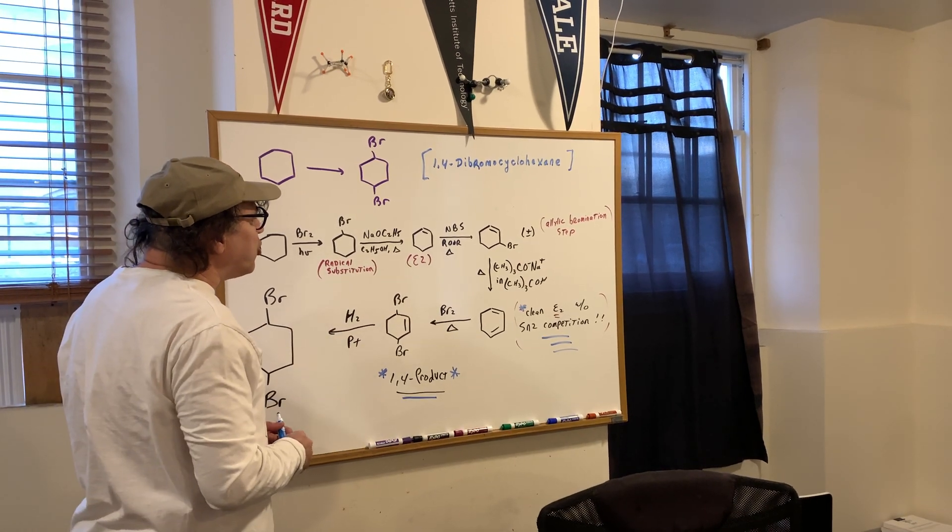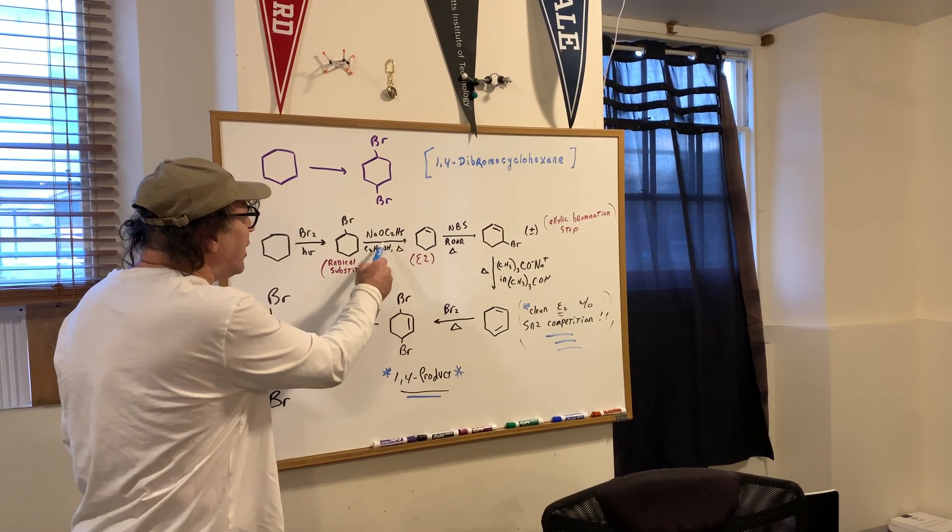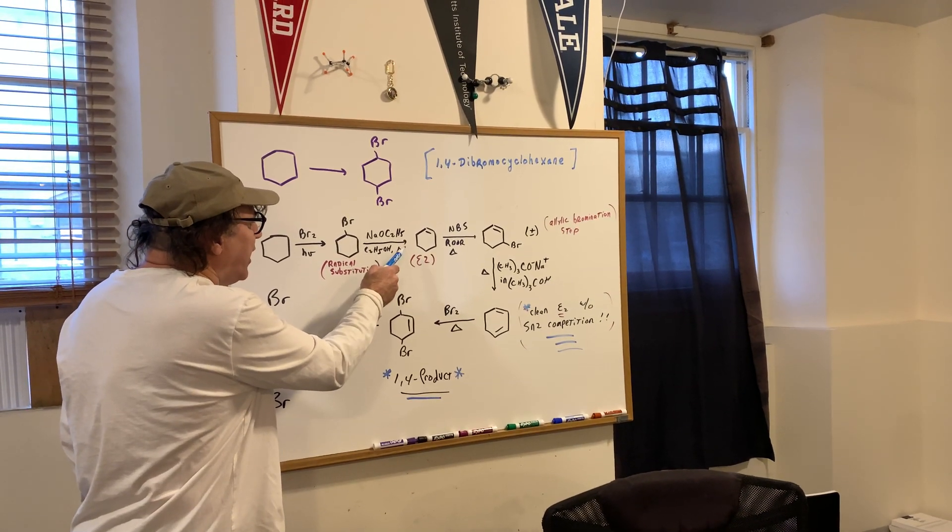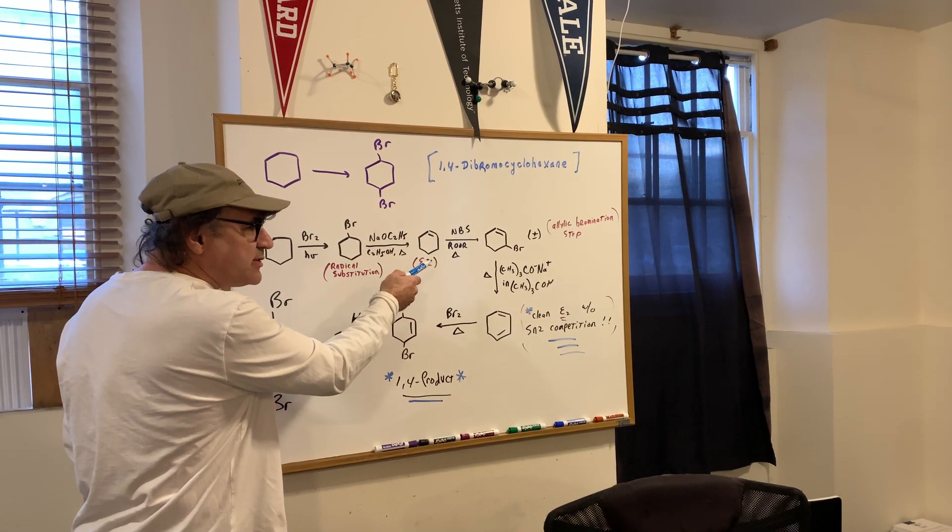Then I'm going to do an E2 reaction using sodium methoxide, in ethanol, with plenty of heat. I use a lot of heat because I don't want to have too much of the SN2 competition.